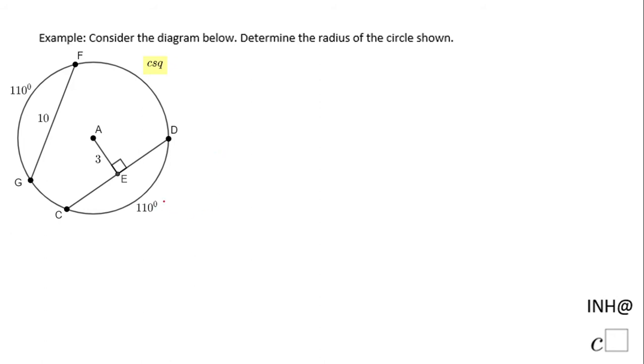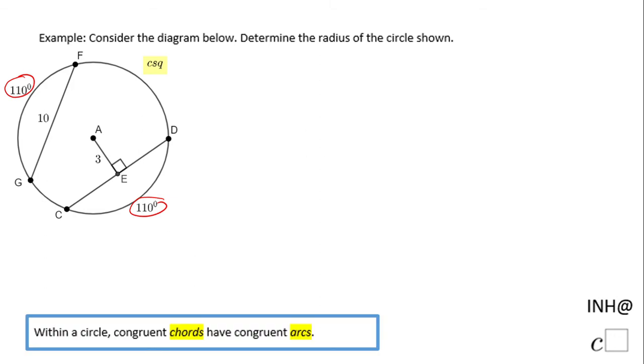These two arcs CD and GF are congruent, which is very important. We need to determine the radius of the circle shown. First, I'd like to share this theorem with you.